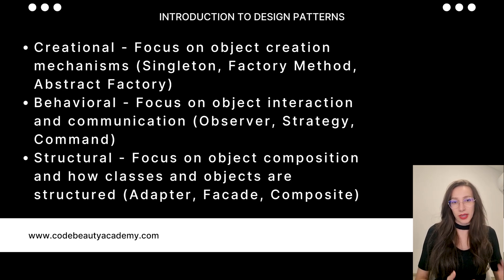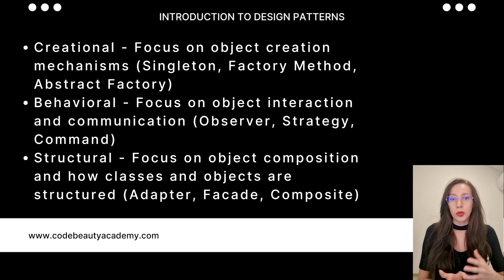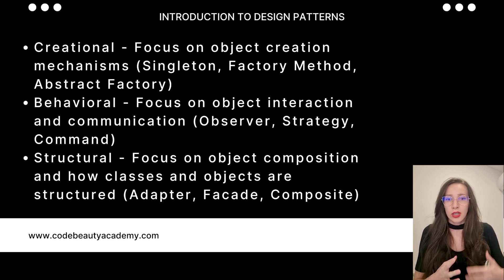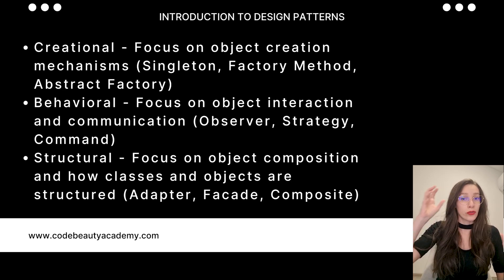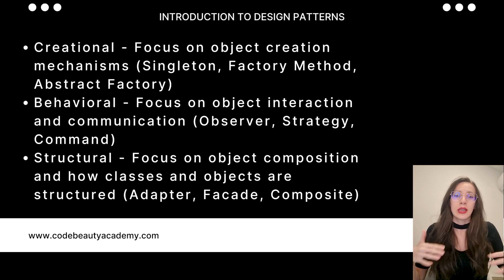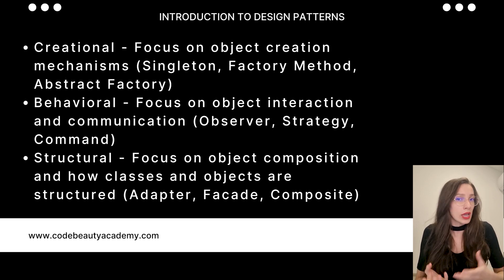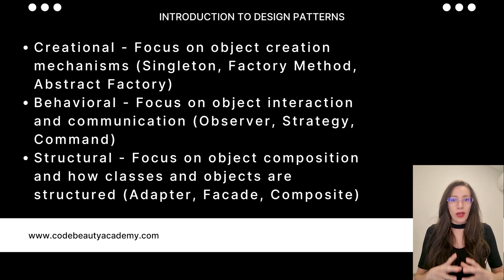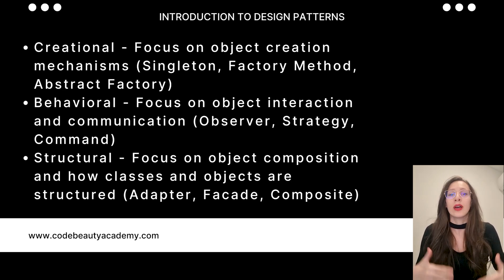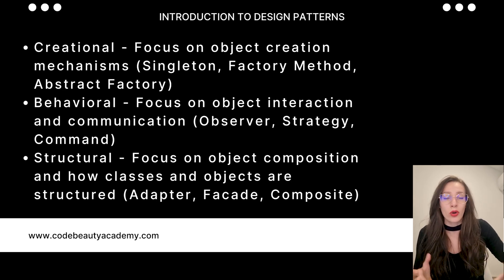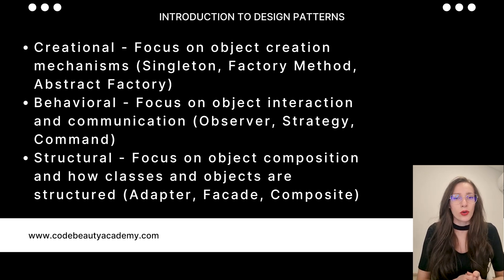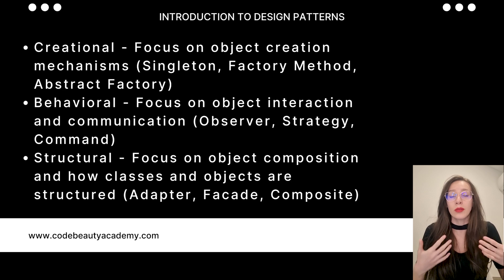The second category are behavioral design patterns, and they solve problems of communication between different objects. For example, if you have one component in your application that needs to send a notification to another component, you can use behavioral design patterns to solve those types of problems. They also help with delegation — instead of having one object doing all of the work, you can distribute that work across multiple objects, making your code flexible, easier to maintain, and more optimized.